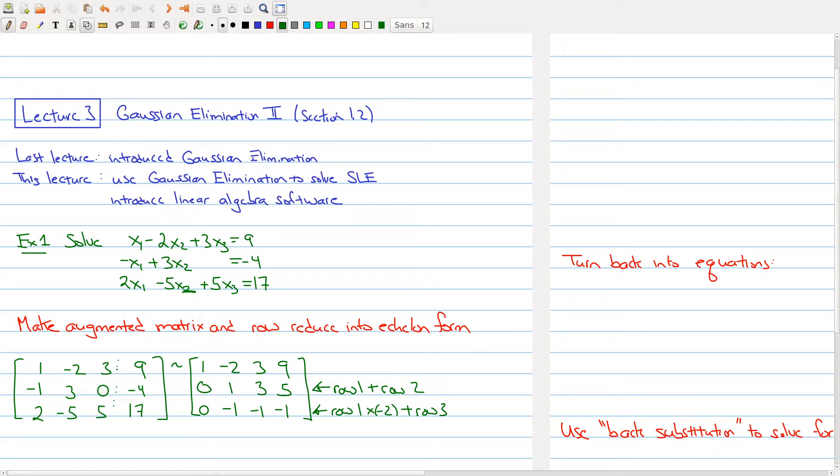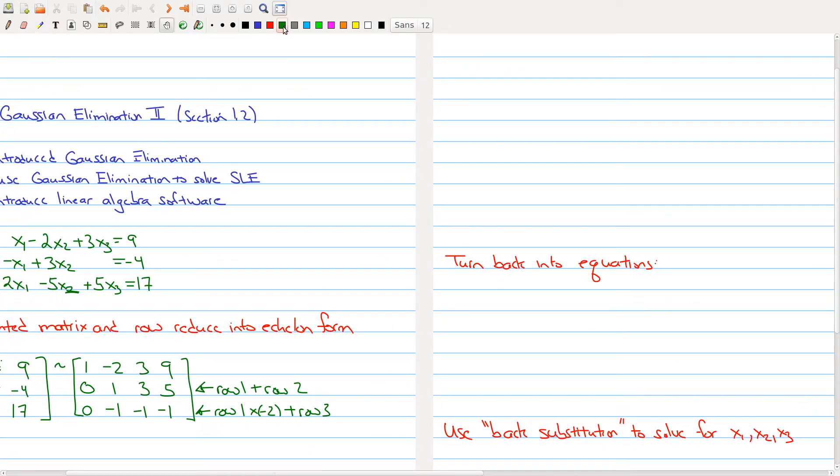Now I want to keep reducing because I'm not in echelon form. So I will move things over here slightly so we can see both equations at the same time. So now I want to take this matrix. Now I have a 1 here and I want to get rid of this minus 1. So I will have 1, minus 2, 3, 9, 0, 1, 3, 5. And now I want to take row 2 and add it to row 3. So when I do that, 1 plus minus 1 gives me 0, 3 plus minus 1 gives me 2, and 5 plus minus 1 gives me 4. So at this stage I can stop because I've actually found the echelon form.